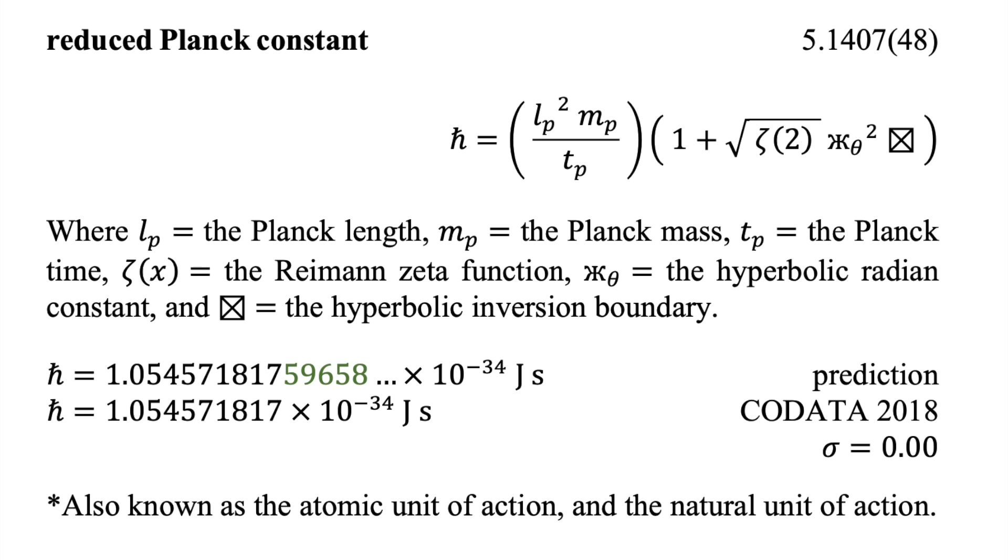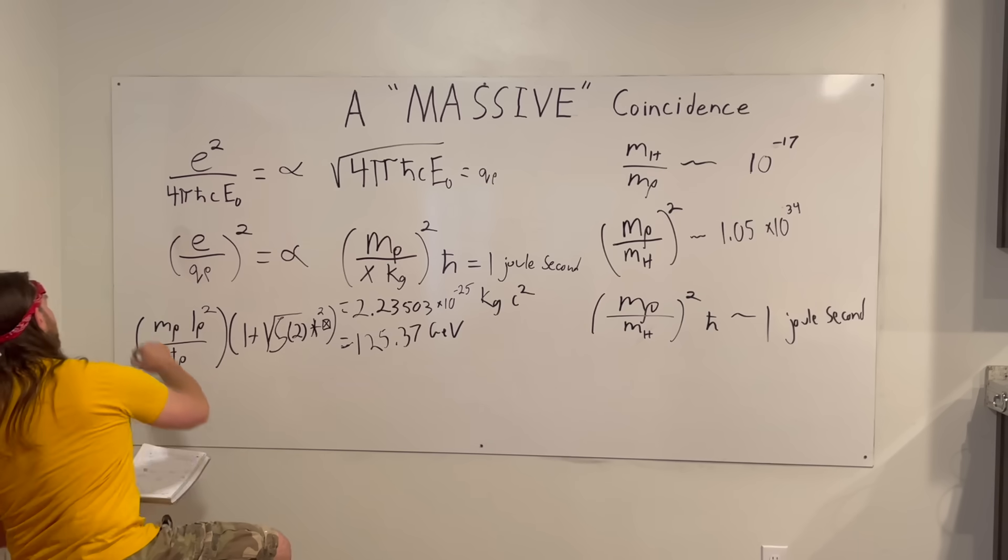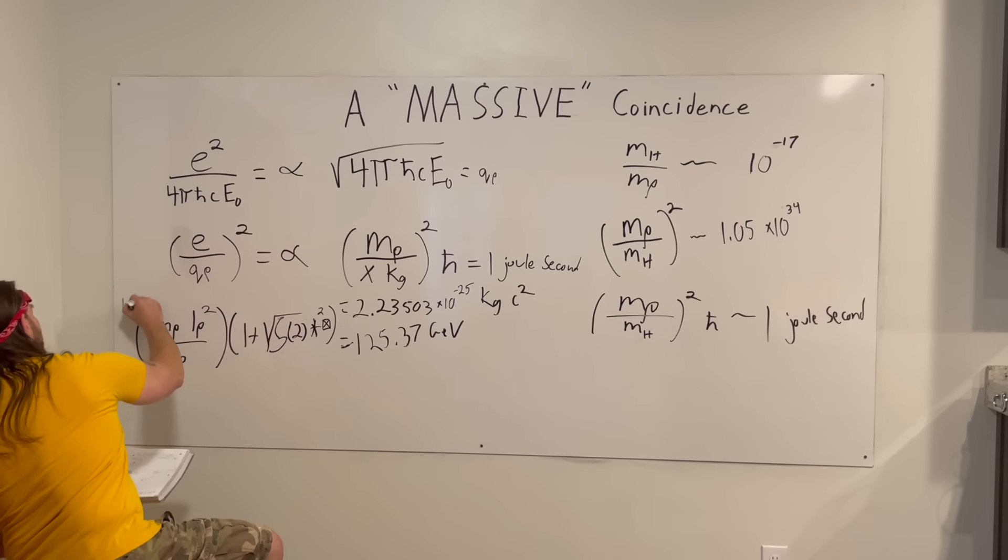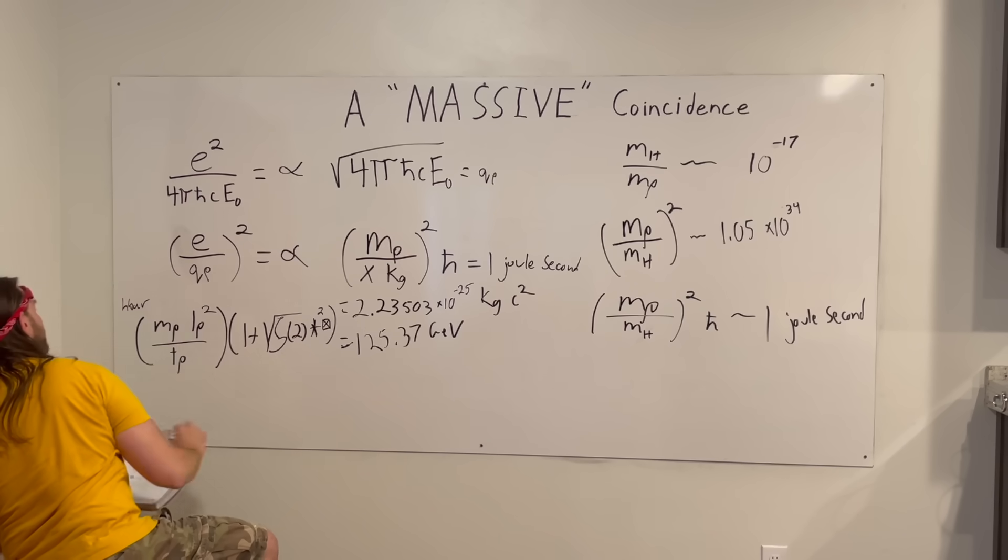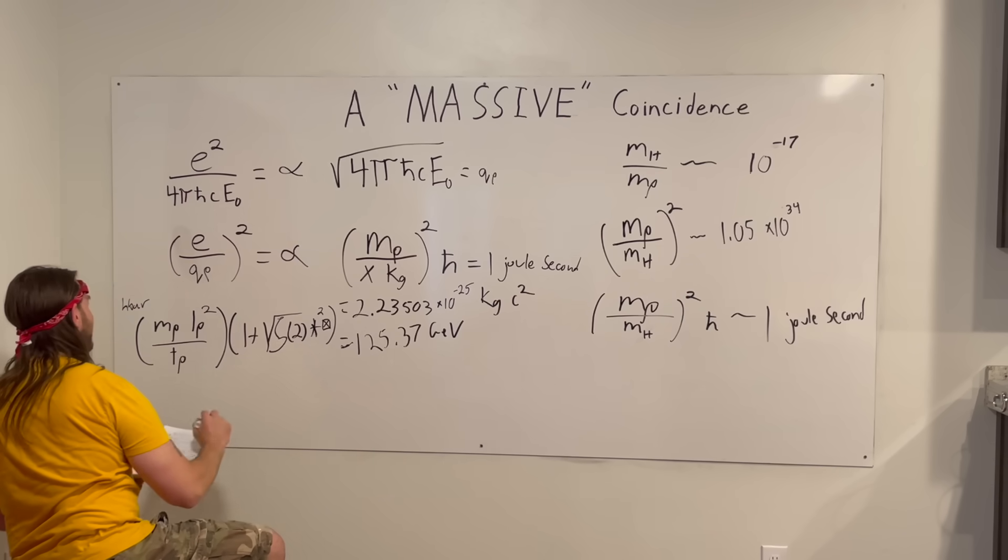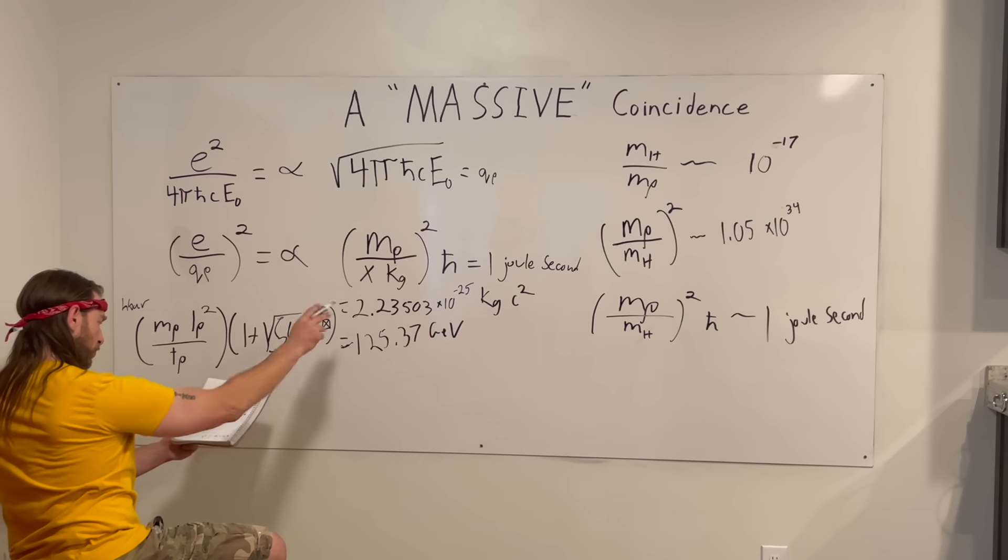So, let's put it on the video, zeta squared times our inversion boundary, and that's for h-bar, but to kind of test it a little bit, it's like, all right, this construction has two Planck masses, two Higgs masses.